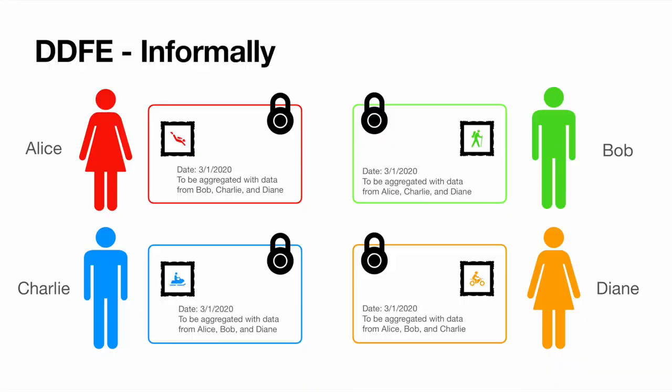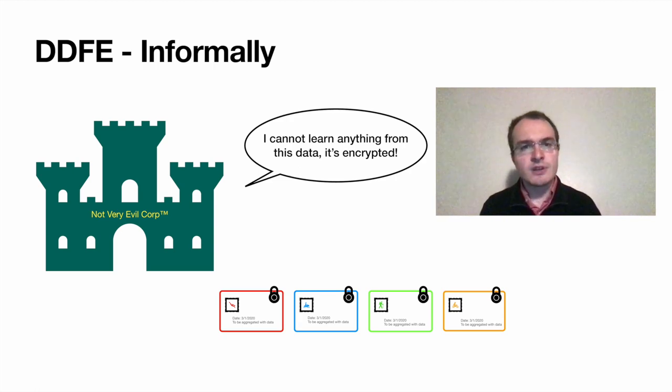So all of our friends here would encrypt the data under DDFE. There's some metadata associated with each ciphertext, namely the date and the set of participants. And the policy will be, let's say, that data can only be aggregated between participants that all agree on the date and the set of participants. So they send off those ciphertexts to the Not Very Evil Corp. And at that point, these are totally opaque to the company. It might as well be your favorite flavor of IND-CPA encryption. That's because the company has no functional keys.